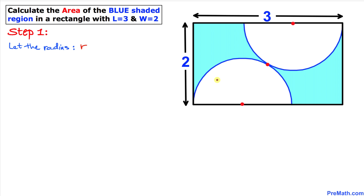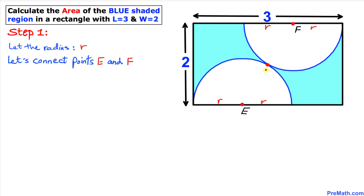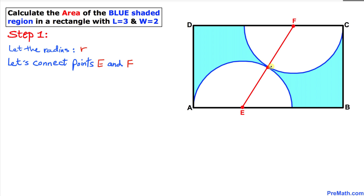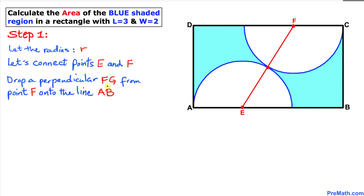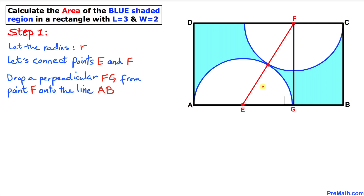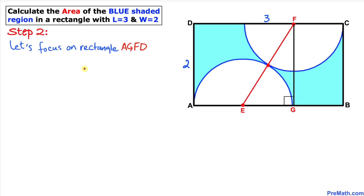Let's call the radius of each semi-circle r. We are going to connect point E and F as you can see in this diagram, and then drop a perpendicular FG from point F onto line AB, where point G is somewhere along that line.